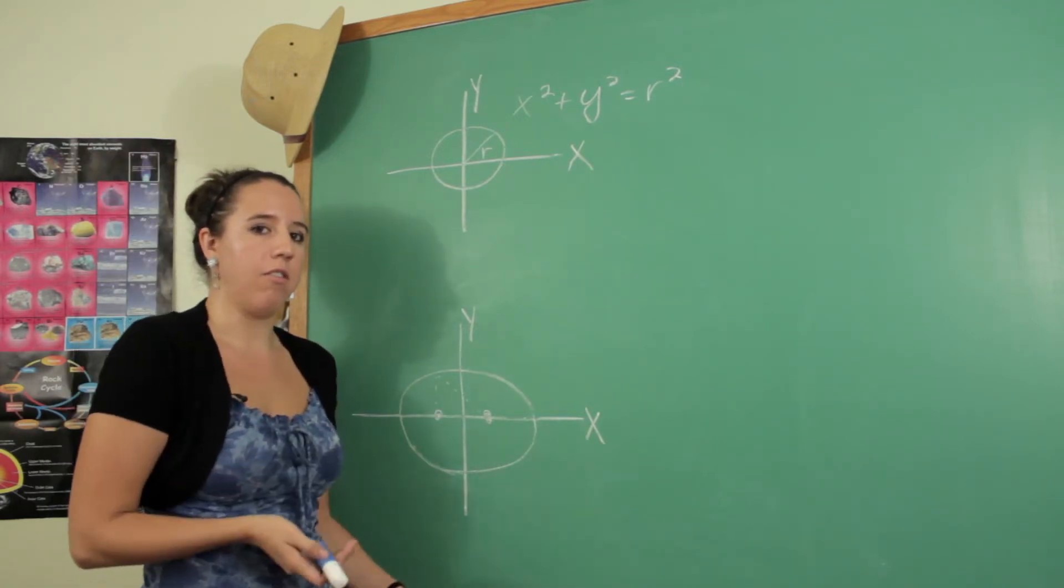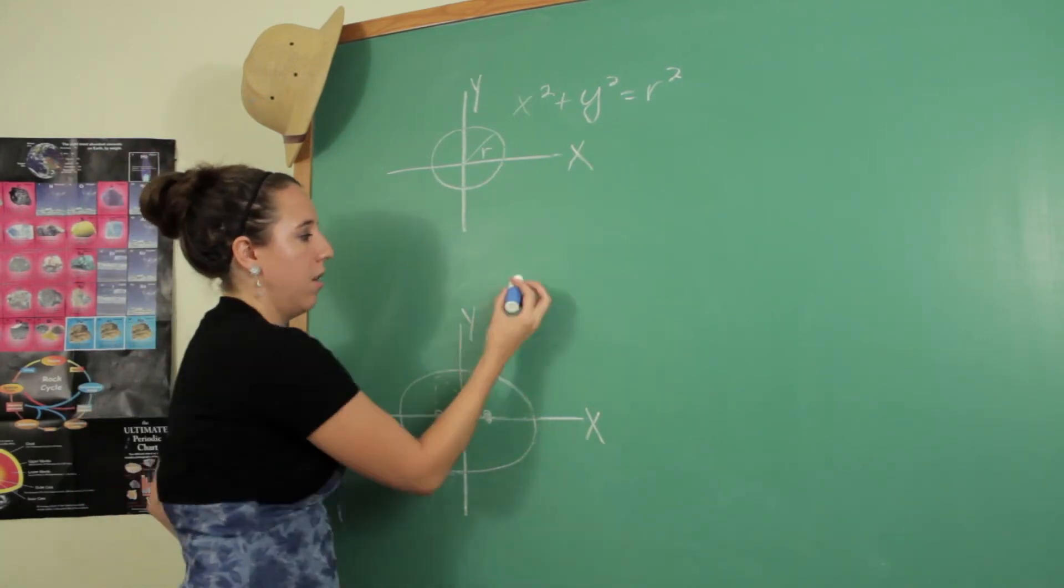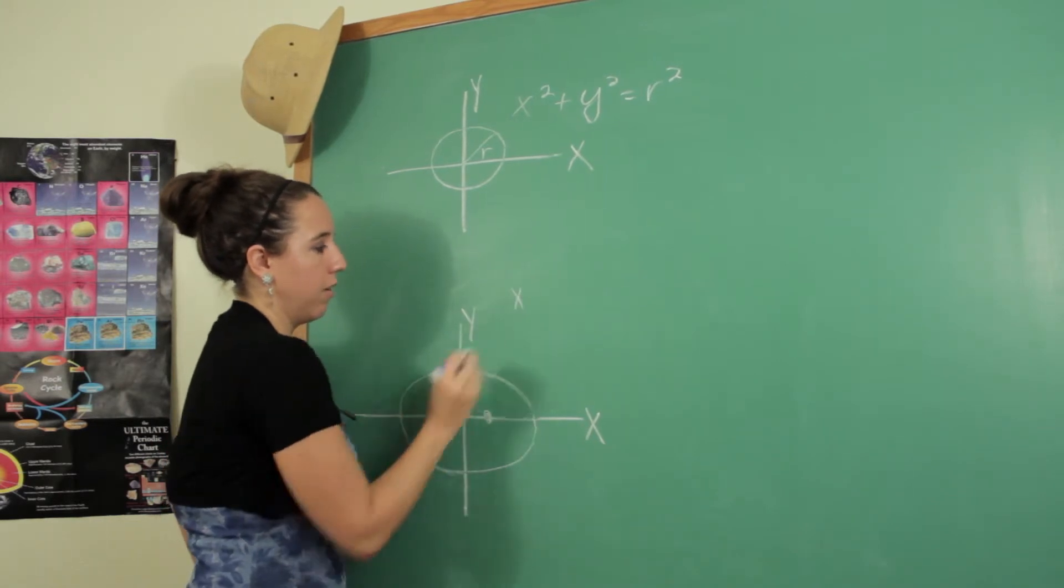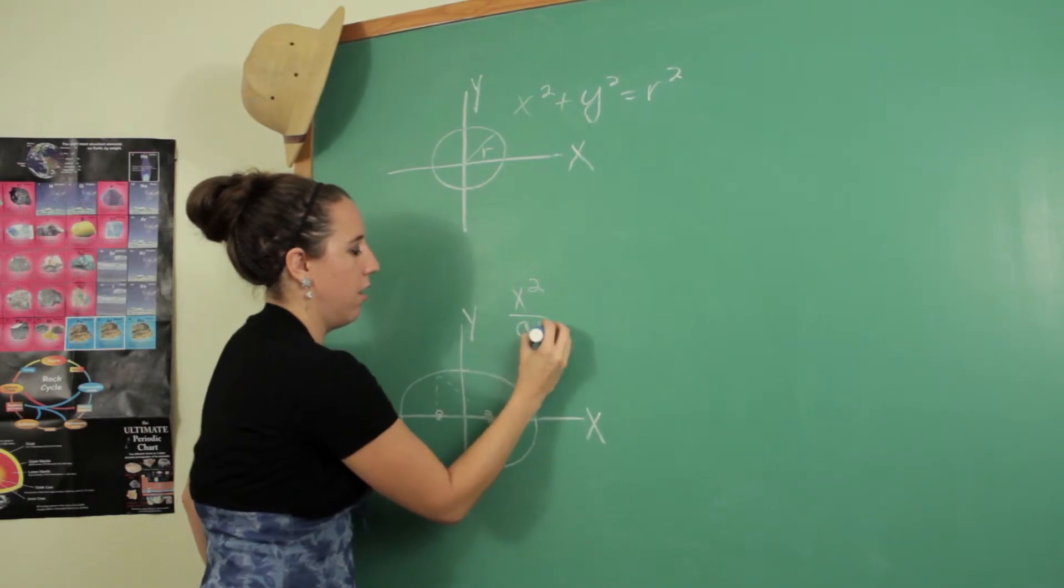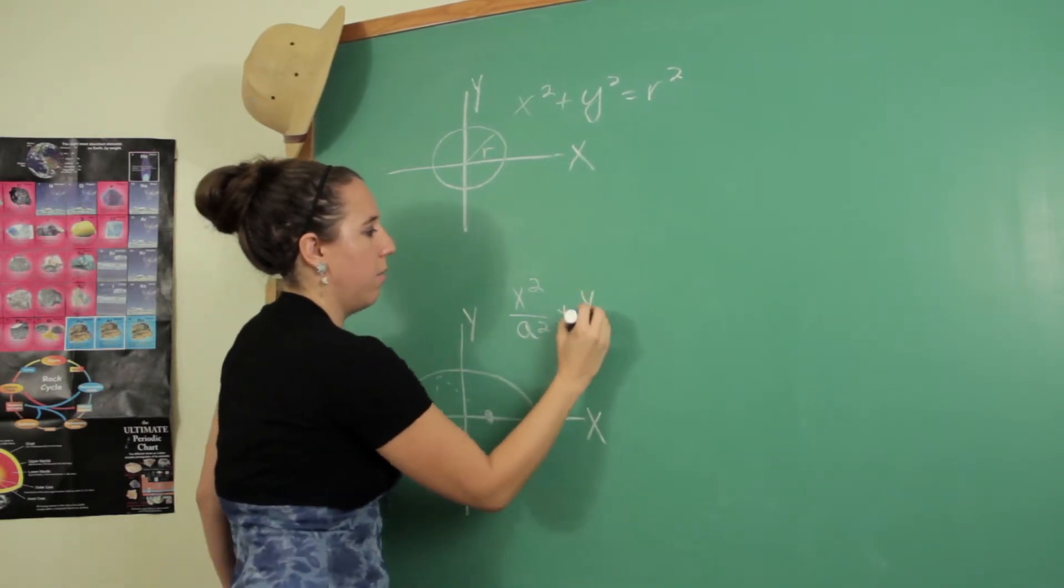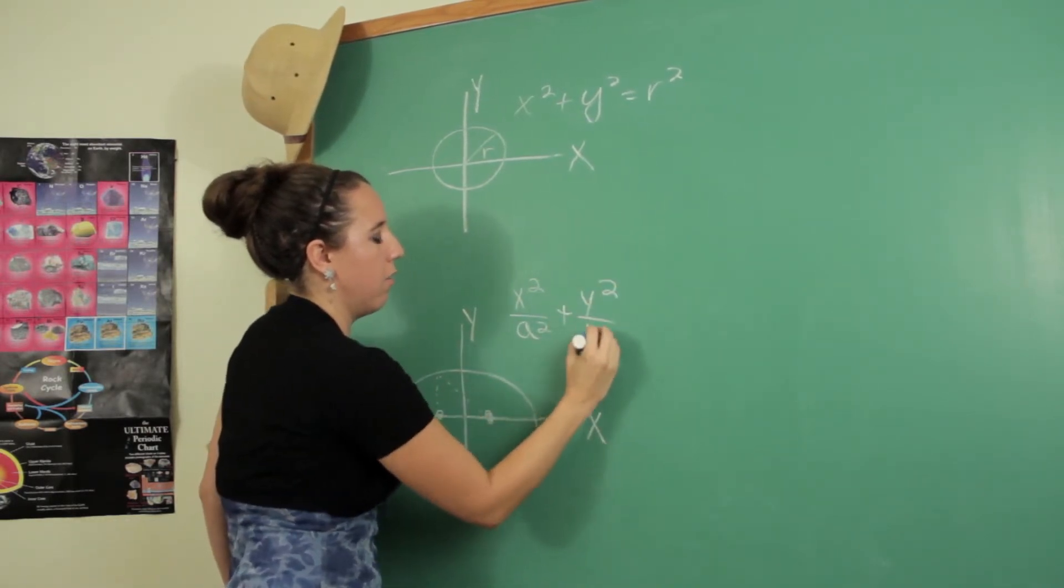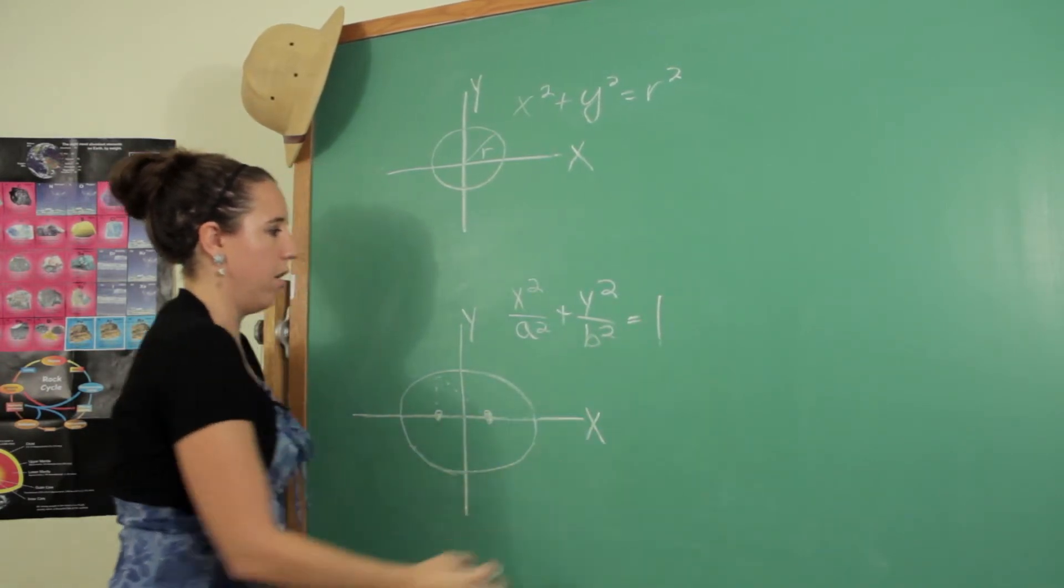And the ellipse's equation kind of mirrors this one for an ellipse that looks like this. x squared over a squared plus y squared over b squared equals 1.